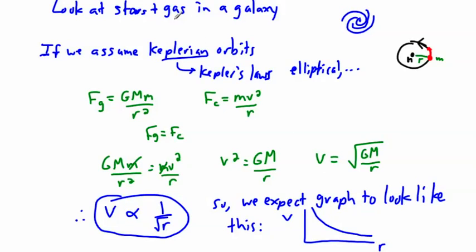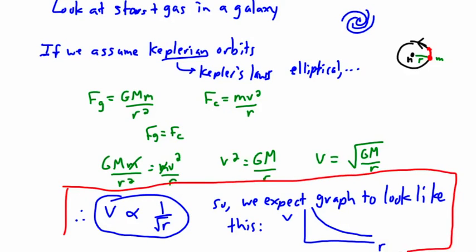Something that goes one over square root of R looks like this. We would expect to do something like this. This is what's expected. This is the key thing right here. We would expect that these particles or these planets or these stars or these gas particles, all this material here should really be doing this. It should be going, at small R values you should have large V's and as you go down, it should go down steeply like this.